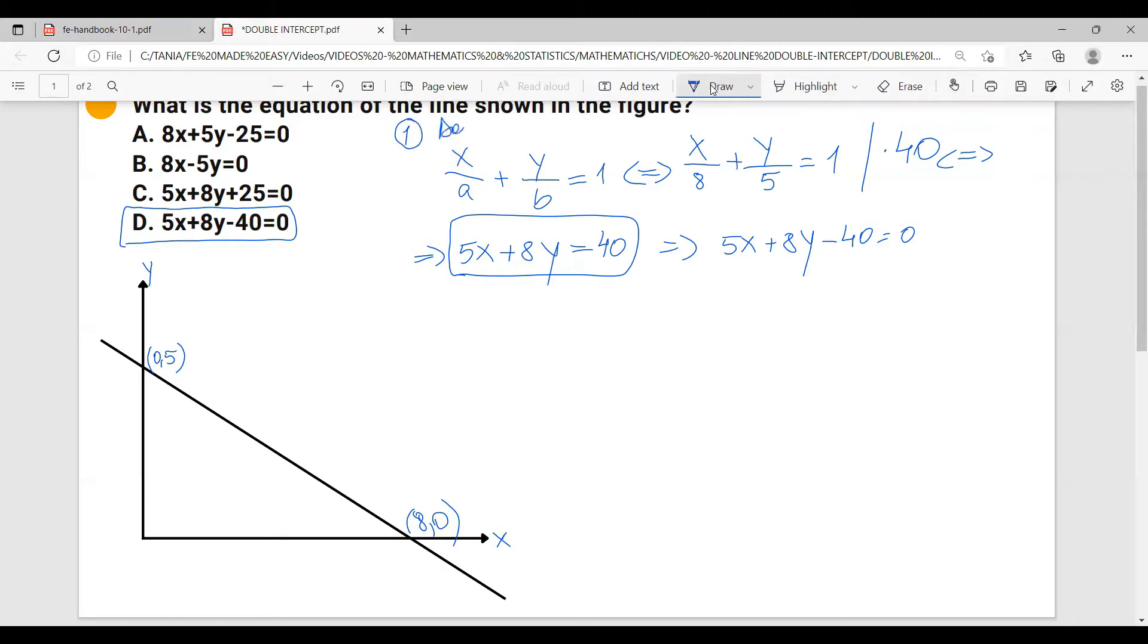If you're not familiar with the double intercept form, this equation can also be expressed using the slope y-intercept form. The y-intercept is 5. So let me write down, this is option number one, this is the double intercept form, and if you're not familiar with this one, I would express this as slope intercept form.